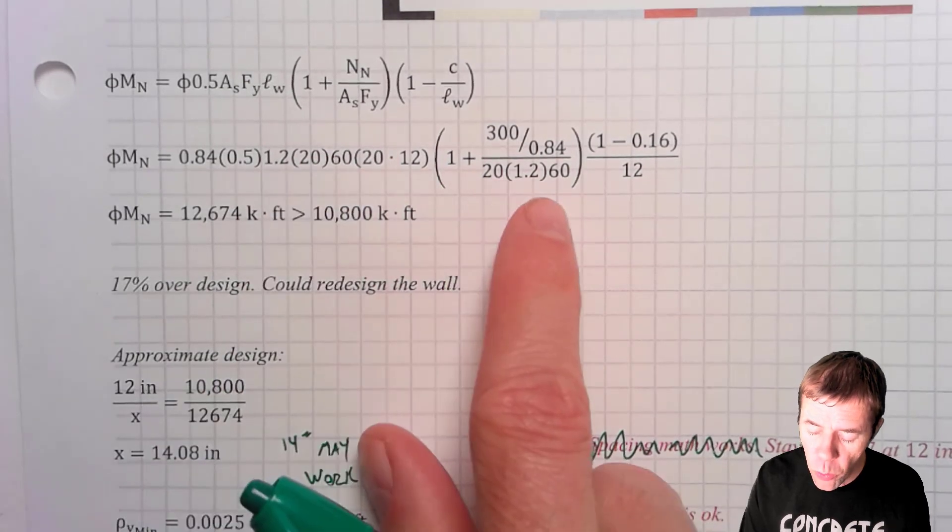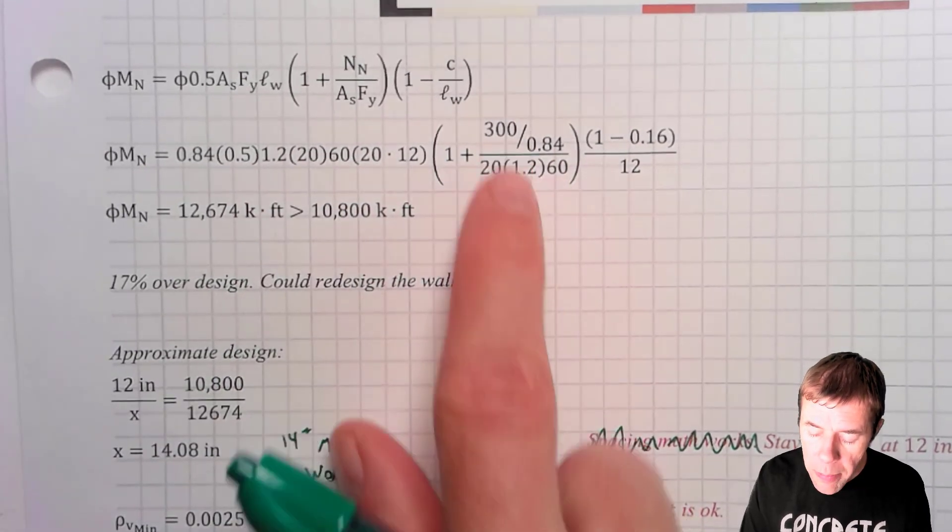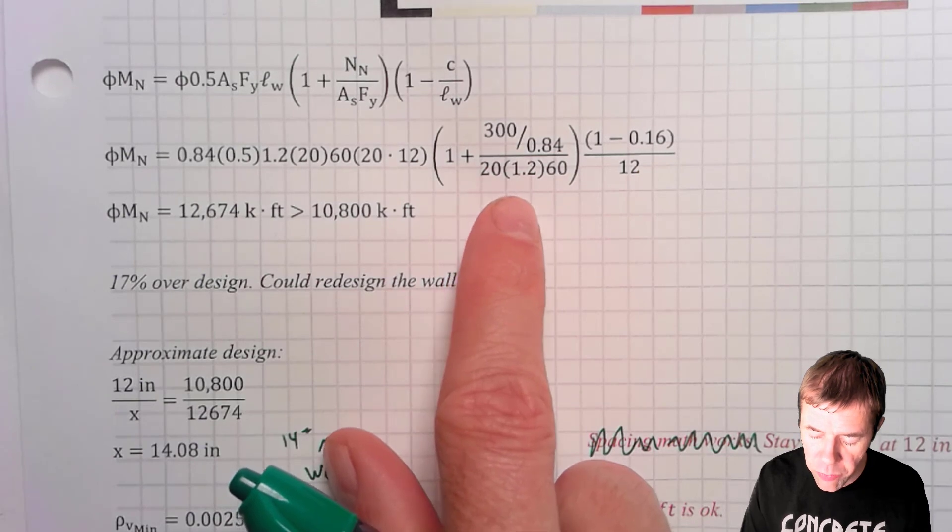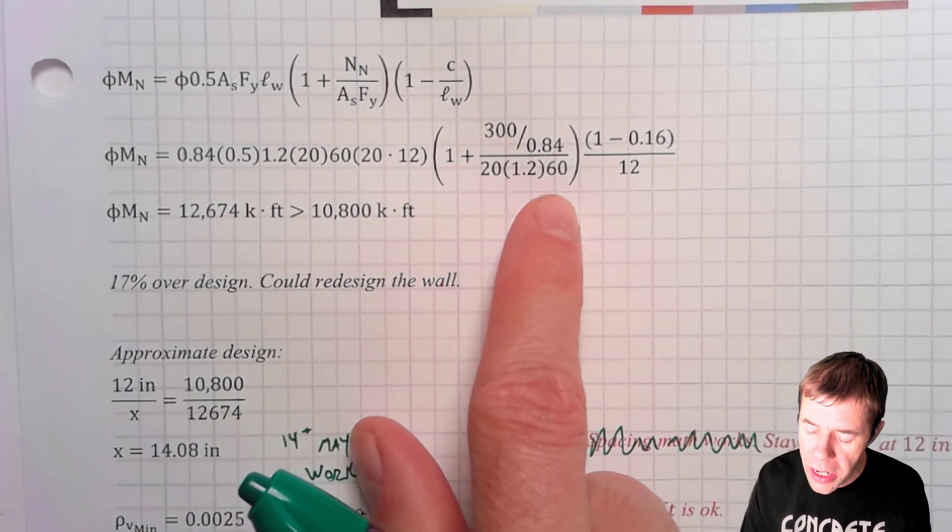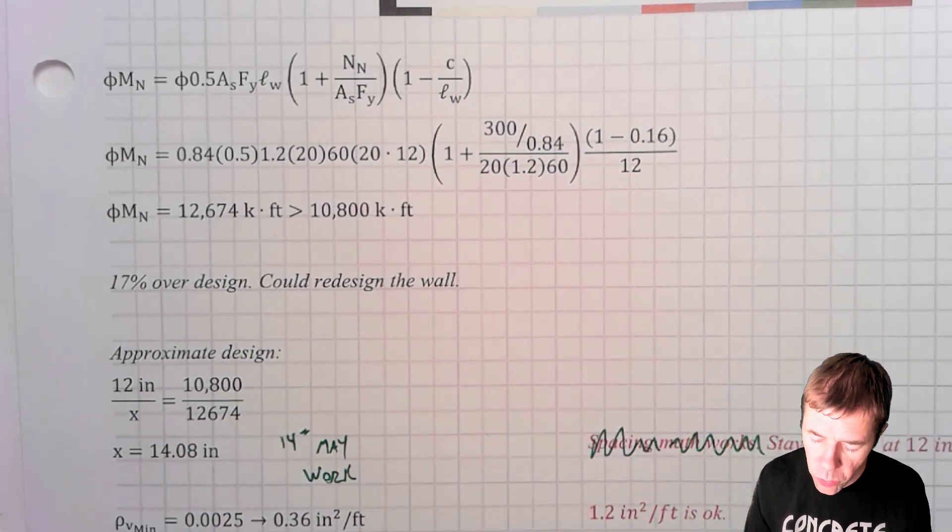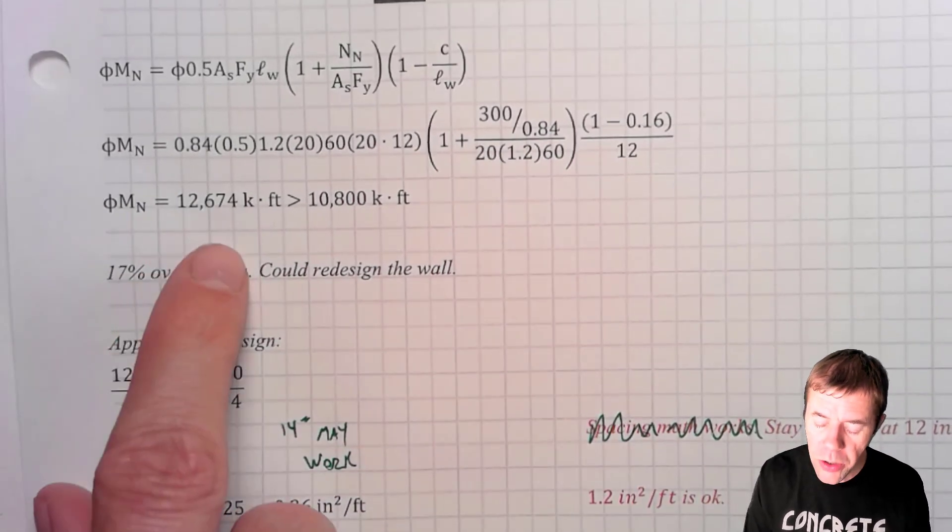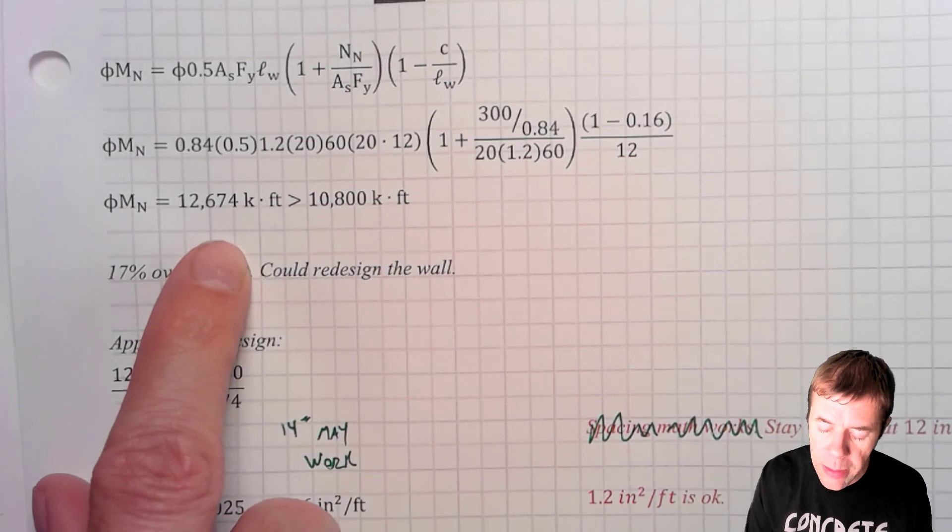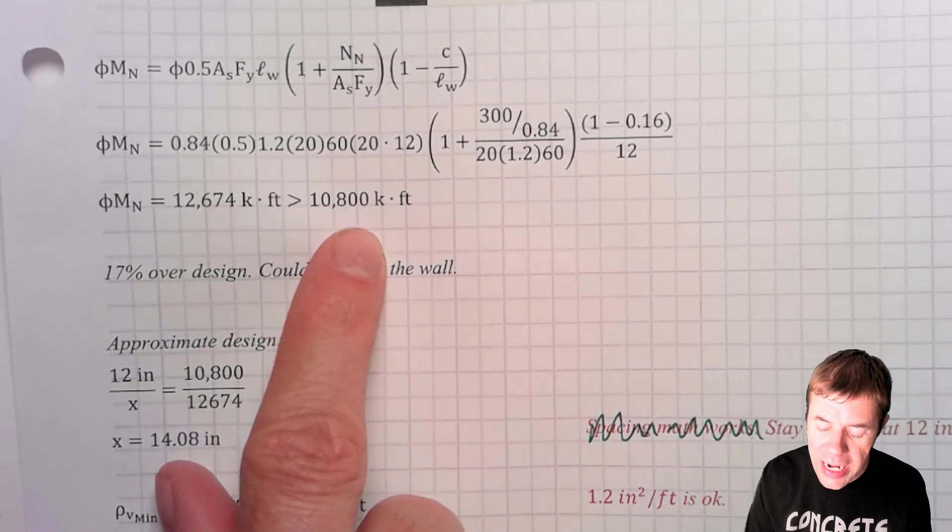I plug in. These are all numbers that I found before. This is my phi factor. Again, this is my axial load. My area steel, again, over my wall times fy. And this is this 1 minus c all over lw. So I get my moment here is 12,674 kip feet, which happens to be greater than 1080 kip feet.